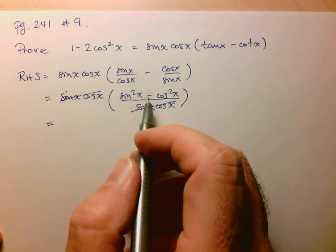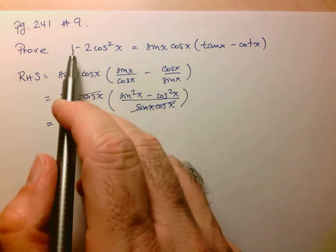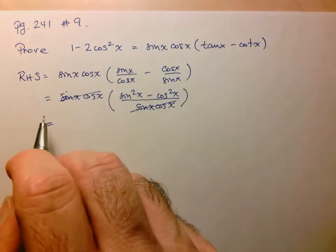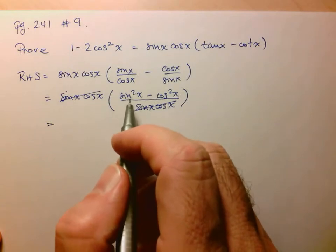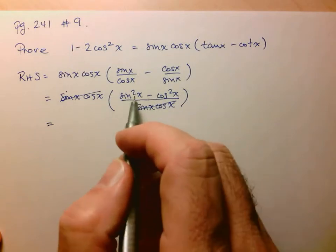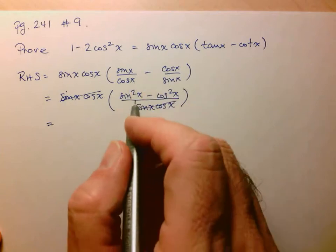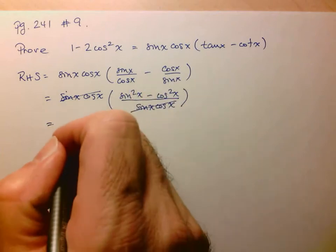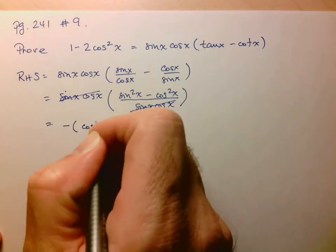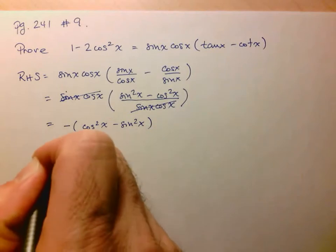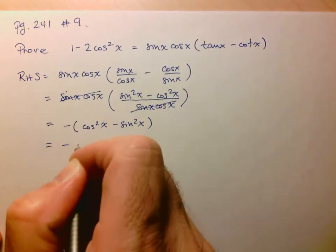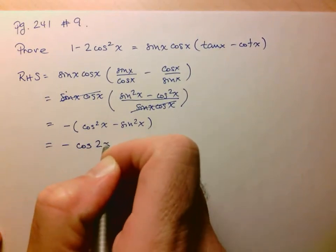But if I look at this one here and that one that I have on the left-hand side, I really see that they're very similar. I just have to factor out a negative one here. So if I factor out a negative one, I end up with negative cos squared x minus sine squared x. And of course, this here is just equal to cos of 2x.